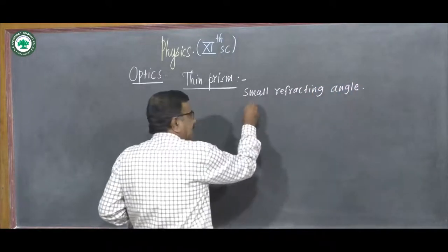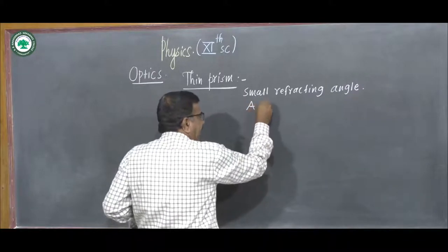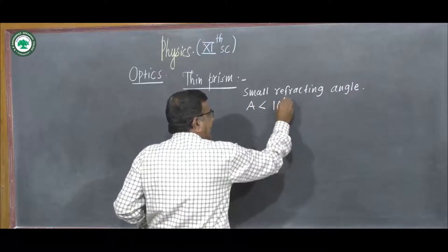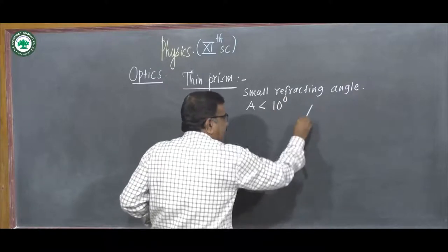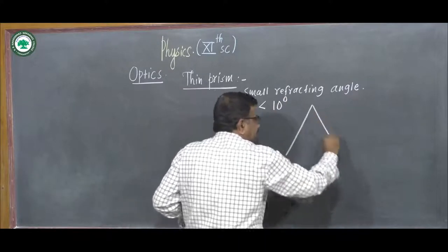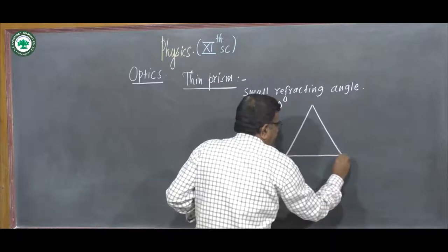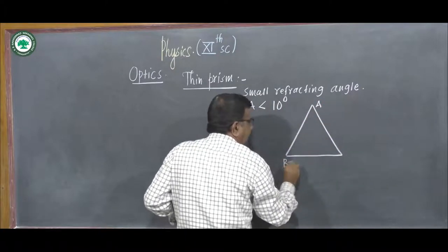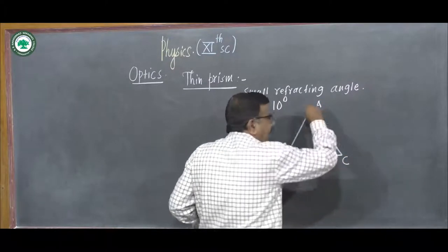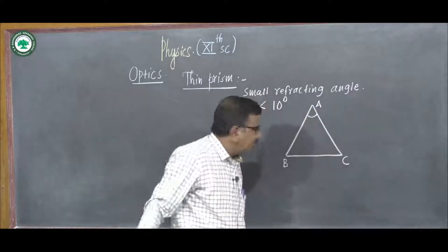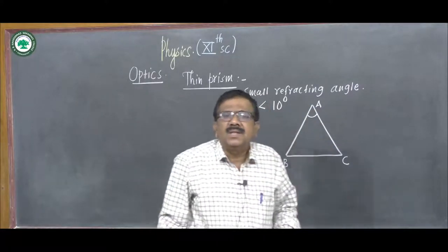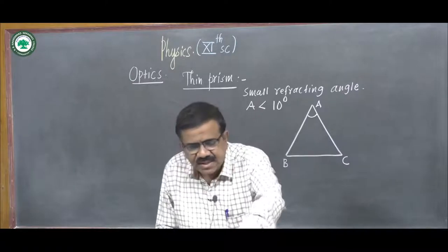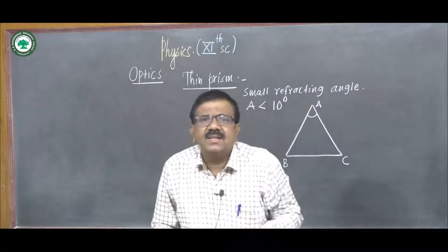That is, the refracting angle A is less than 10 degrees. Suppose this is a prism A, B, C. This A is the refracting angle; B and C form the base of the prism. If the refracting angle is less than 10 degrees, the prism is called a thin prism.